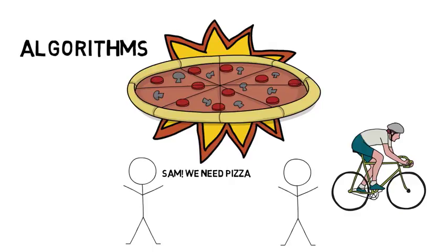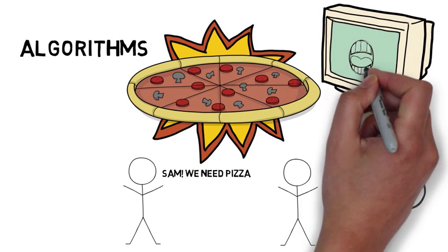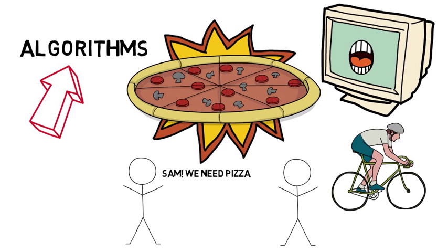If you translate that sequence of actions and the final result into computer speak, the process of getting pizza was an algorithm.